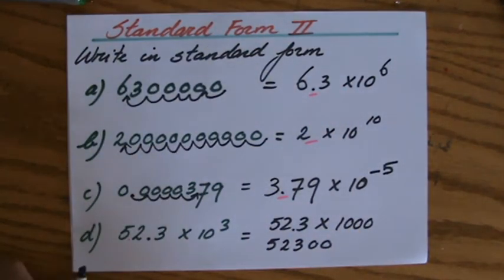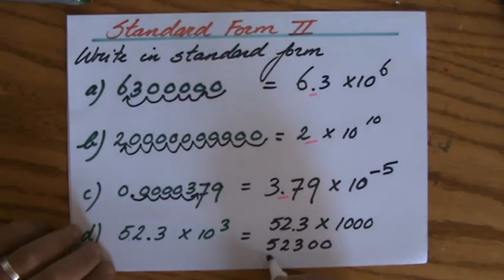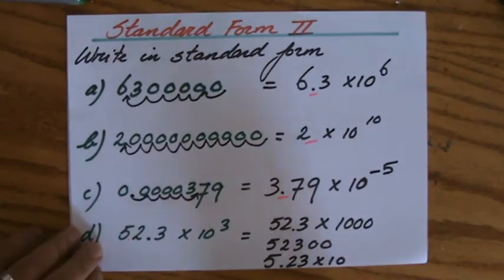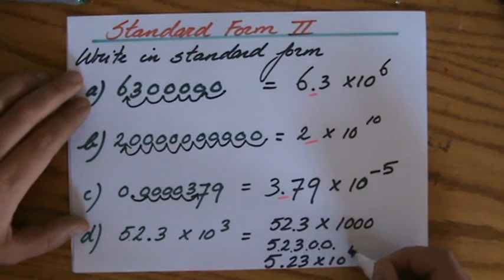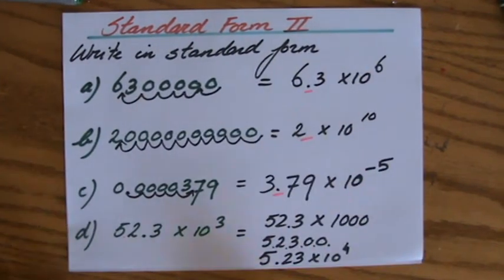Fifty-two thousand three hundred. And then I'm going to write that number in standard form. So 5.23 times ten to the power... Now I'm going to count. Decimal point is here: one, two, three, four places. So times ten to the power four.